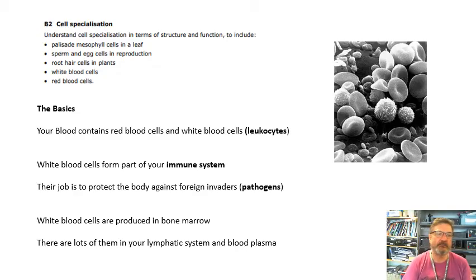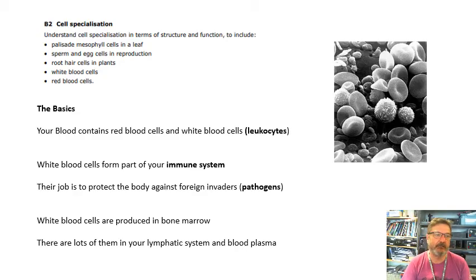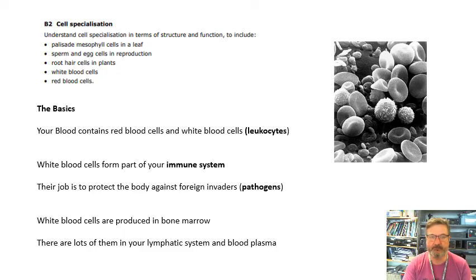White blood cells are produced in bone marrow. There are lots of them in your lymphatic system and in your blood plasma.